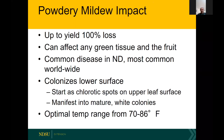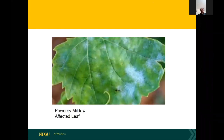Powdery mildew does originally colonize the lower leaf surface, but then moves to the upper leaf surface where it sporulates. It has an optimal range from 70 to 86 degrees Fahrenheit, but the fungus can infect and have some activity as long as it's warmer than 50 degrees Fahrenheit. This photo shows early infection — you can see some characteristic powdery growth. If that weren't there, you'd just see chlorotic spots, which is really what you're looking for as the first signs of potential infection.